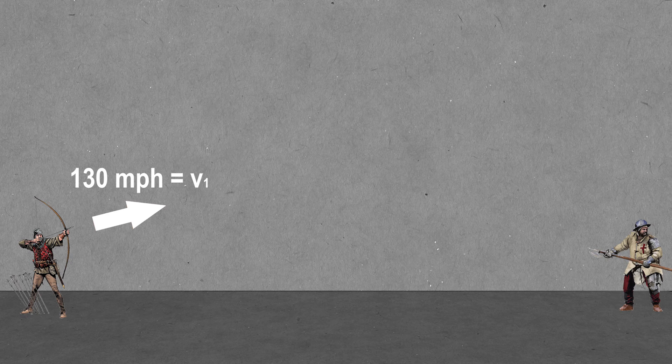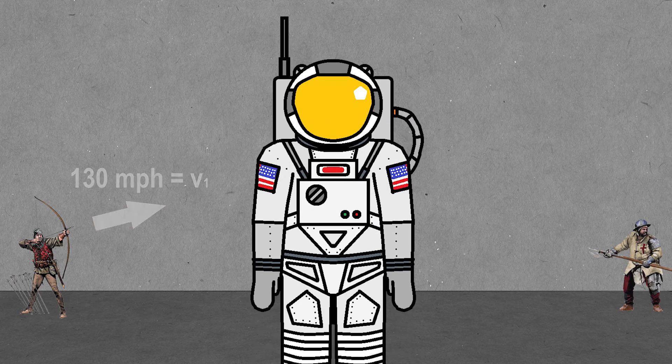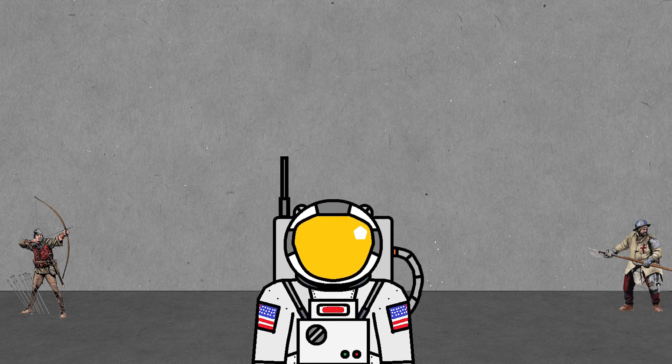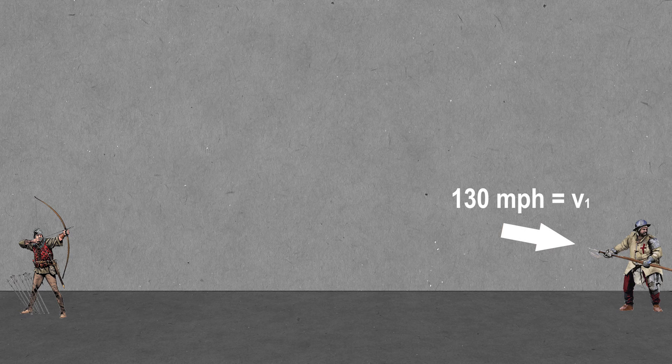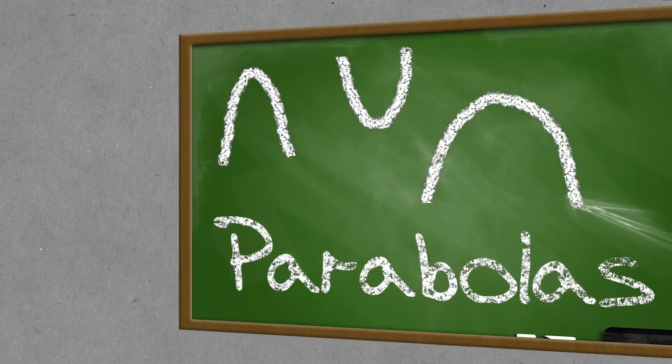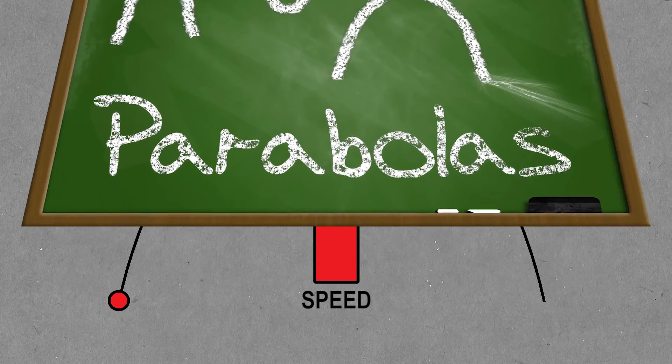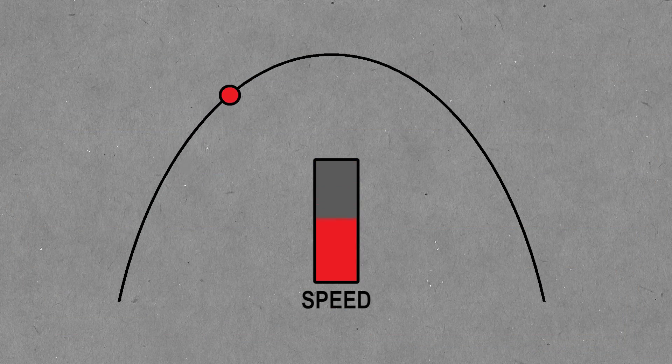Now, what speed do you think it's going to be going when it hits the opponent? Well, I can guarantee that it hits them at V1. Notice that I didn't even consider the path of the arrow because it just isn't important. The great thing about parabolic motion is that as you go up the path, the speed goes down, and as you go down the path, the speed goes up.